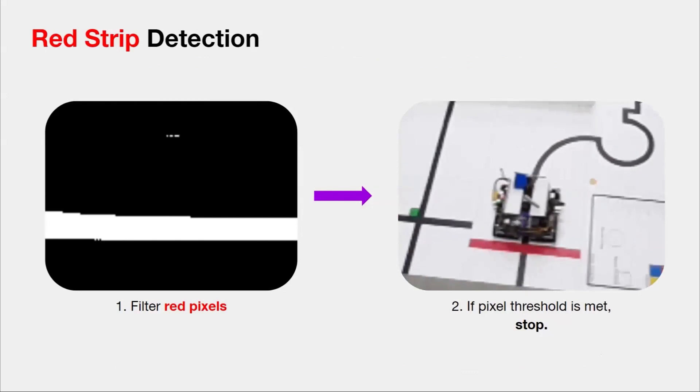Finally, for red strip detection, if the red pixel threshold is met, the robot stops and the run is completed.